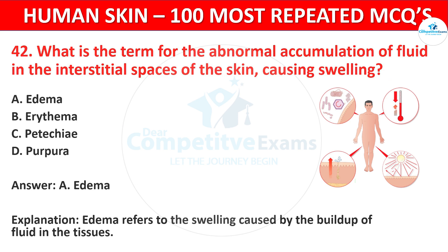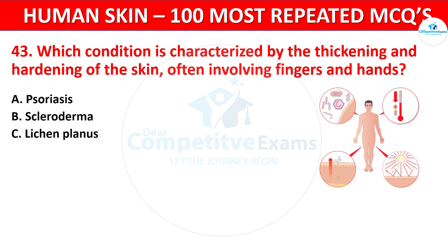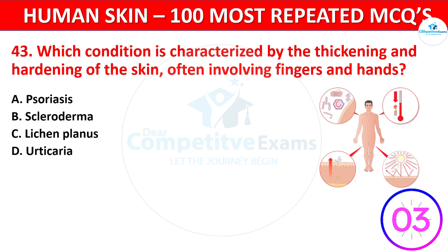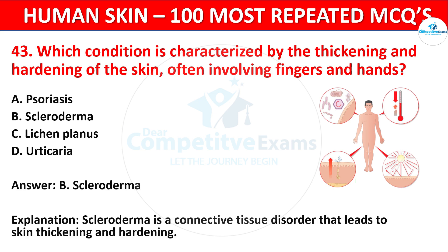Question 43. Which condition is characterized by thickening and hardening of the skin, often involving fingers and hands? Your options: Psoriasis, Scleroderma, Lichen Planus, or Urticaria. The correct answer is Scleroderma. Scleroderma is a connective tissue disorder that leads to skin thickening and hardening.